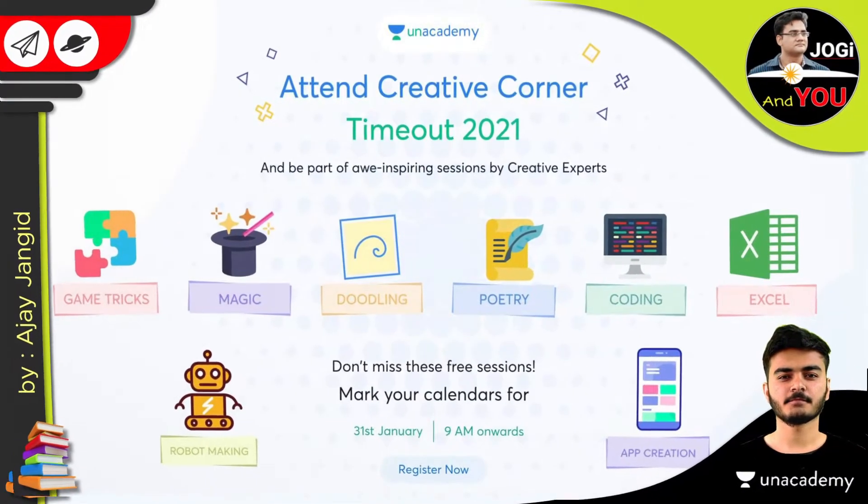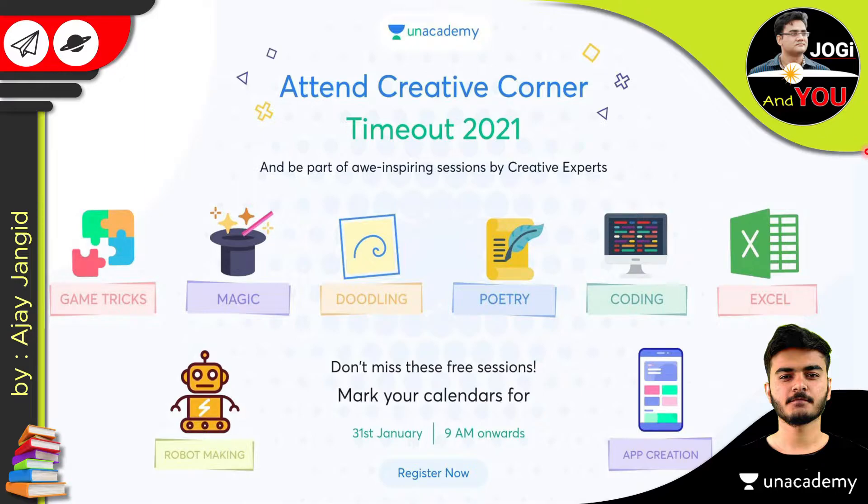Put on your creative hats and get ready for Unacademy's Timeout 2021. And the most exciting part is you can win a subscription for Creative Corners by submitting us a video of yourself recreating something that you learned in our timeout sessions. The date is 31st January and the time is 9 a.m. onwards. All the links are given in the description. Go and register yourself.